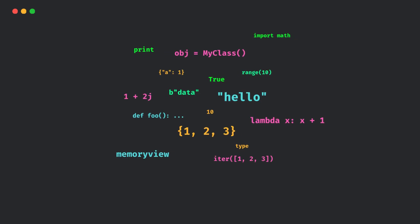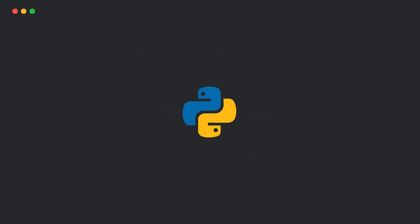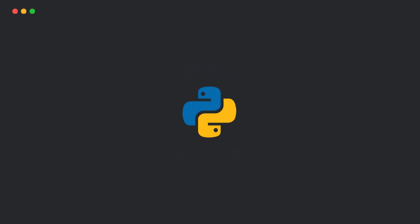Everything in Python is an object. You've probably heard this a hundred times. But let's be honest — what is an object? And what's a class? First, understand this.